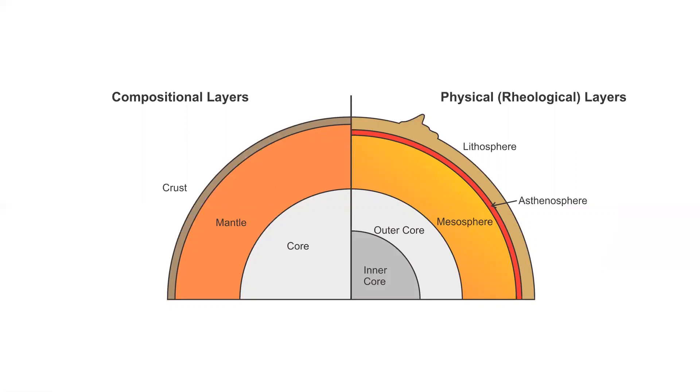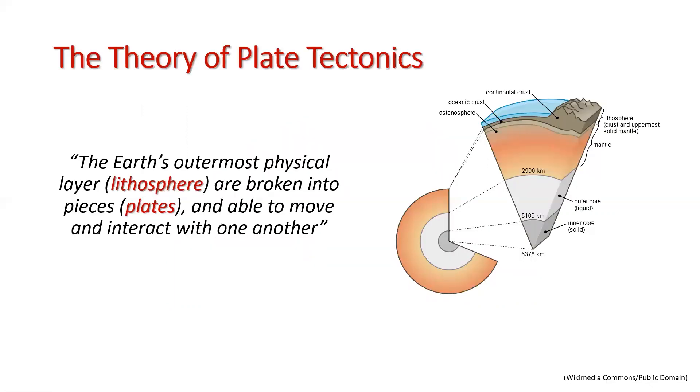Now let's dive into the main topic of this week's lab, the theory of plate tectonics. The theory of plate tectonics states that the earth's outermost physical layers are broken into pieces or plates, and these plates are able to move and interact with one another. These interactions are very important because they are responsible for various processes that are taking place in our planet, such as the formation of mountain chains, most volcanic activities, and earthquakes.